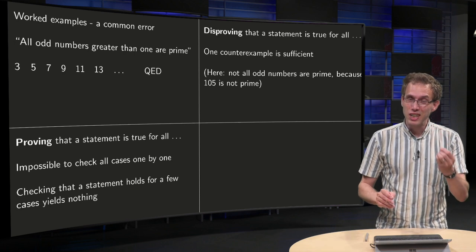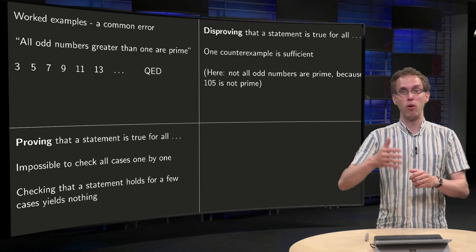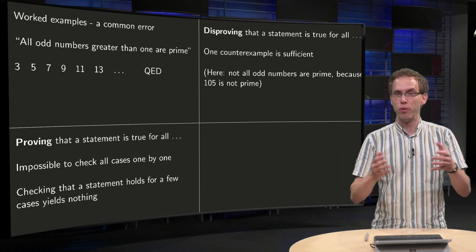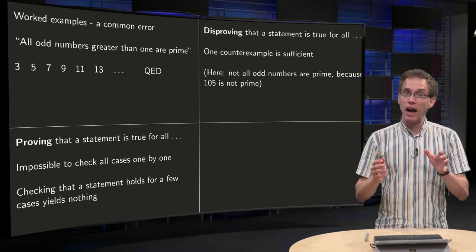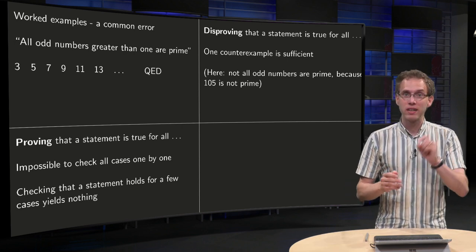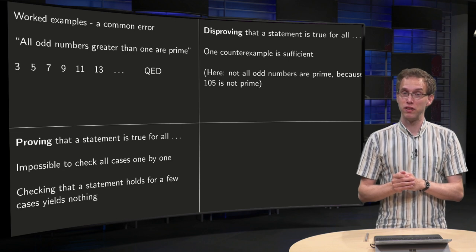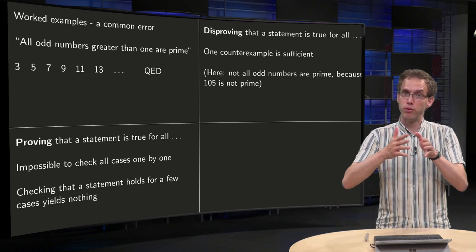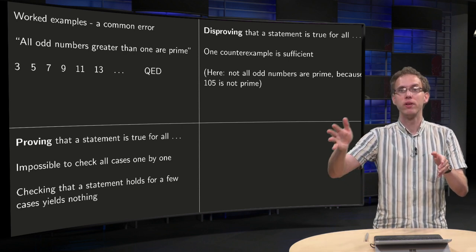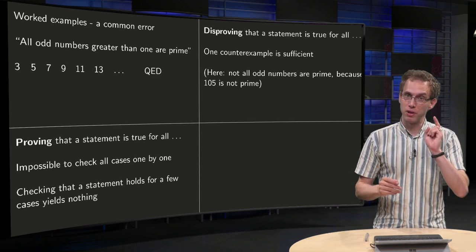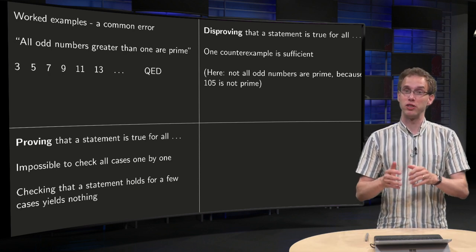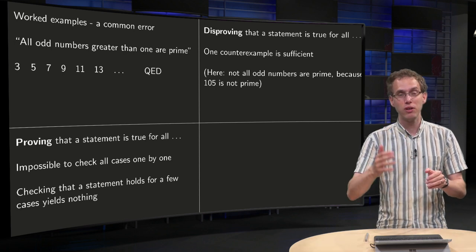If you want to disprove that a statement is true for all odd numbers, in that case one counterexample is sufficient. Because if you're able to give one odd number for which the statement doesn't hold, then you're done.